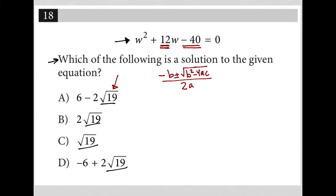a is the coefficient in front of w squared, which makes it 1. b is the coefficient in front of w, which makes it positive 12. And c is the integer that has no variable, making it negative 40. So I'm going to just start plugging all that in to the quadratic formula here.